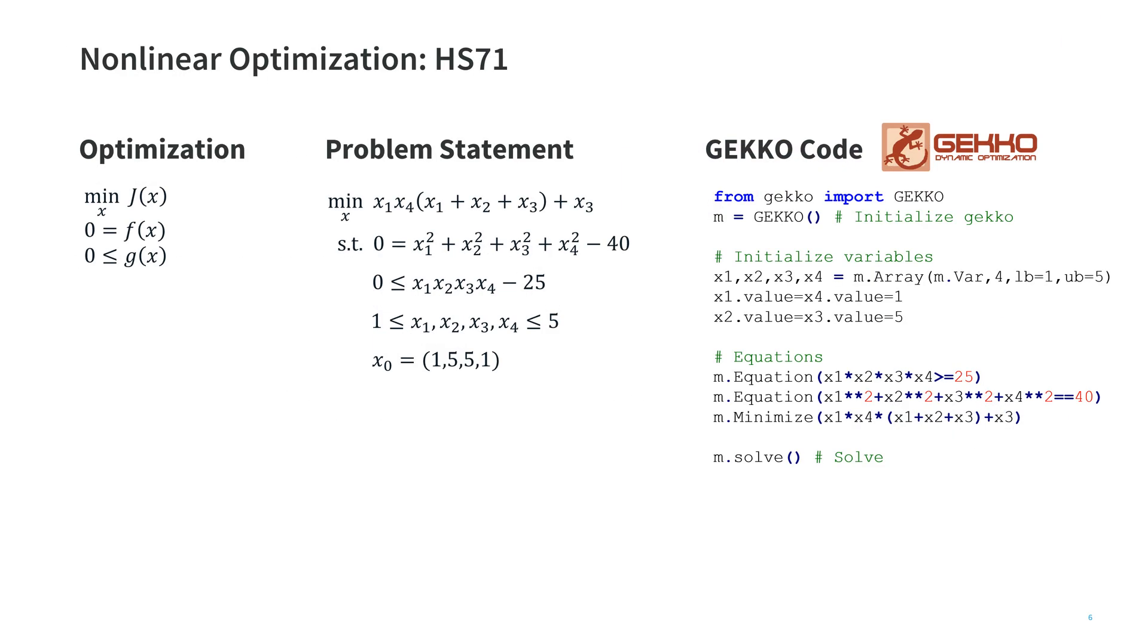So this is just an example, this general optimization problem that we talked about. And here is the Hock-Schaikowsky number 71 problem just as an example where we have an objective function, an equality constraint, and an inequality constraint. And our variables are initialized this way with lower bound of 1 and upper bound of 5 and initial conditions right here. This is how we initialize the variables. We set up the equations, and then we solve it with Gecko.